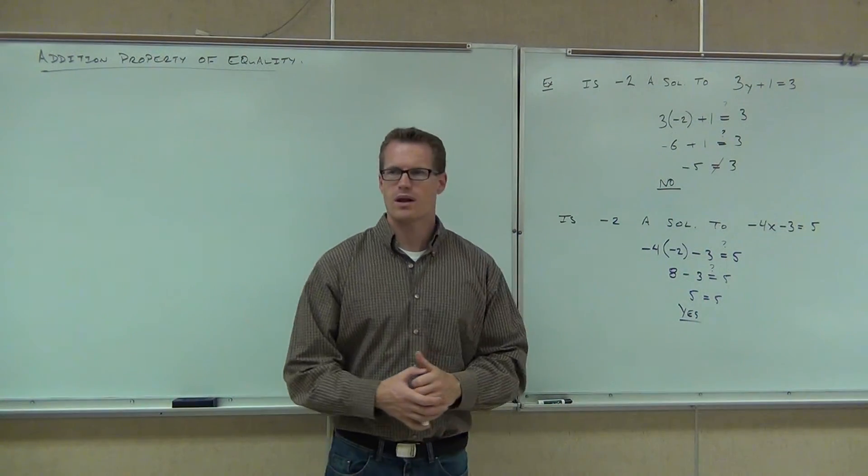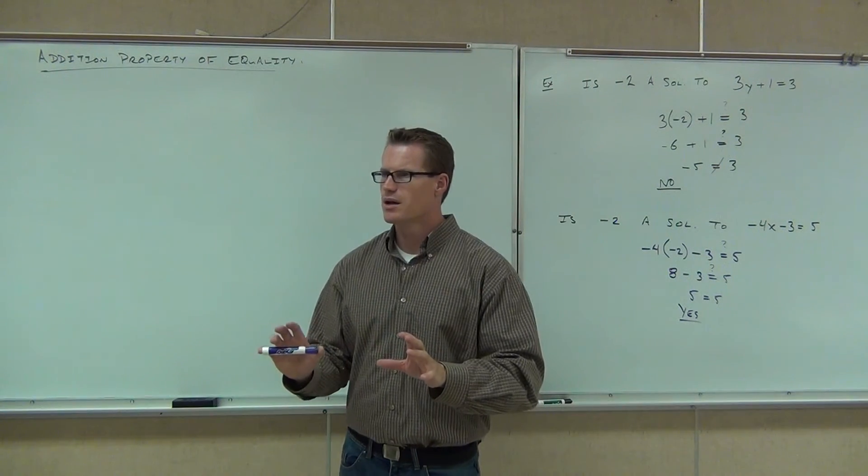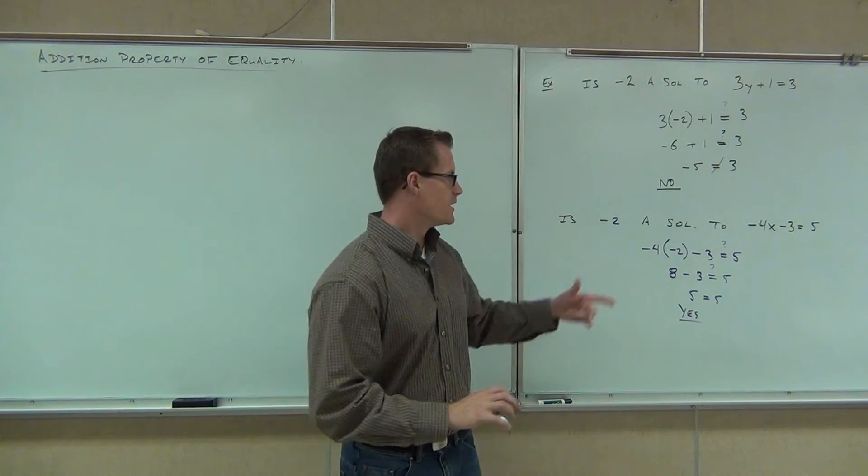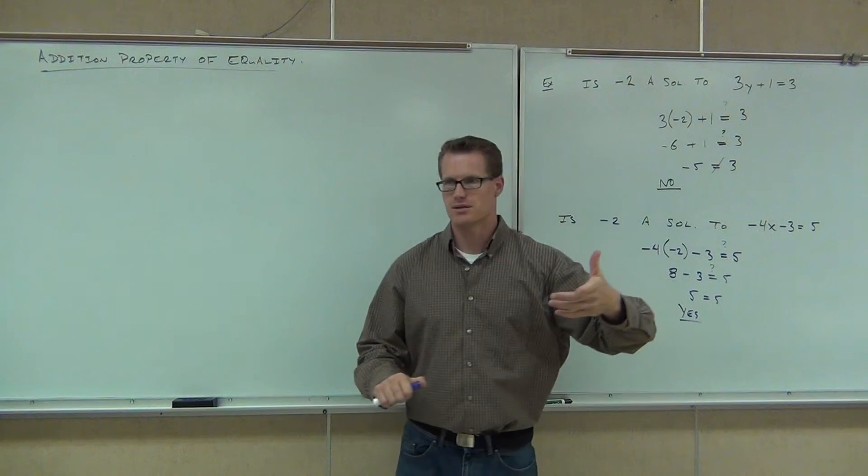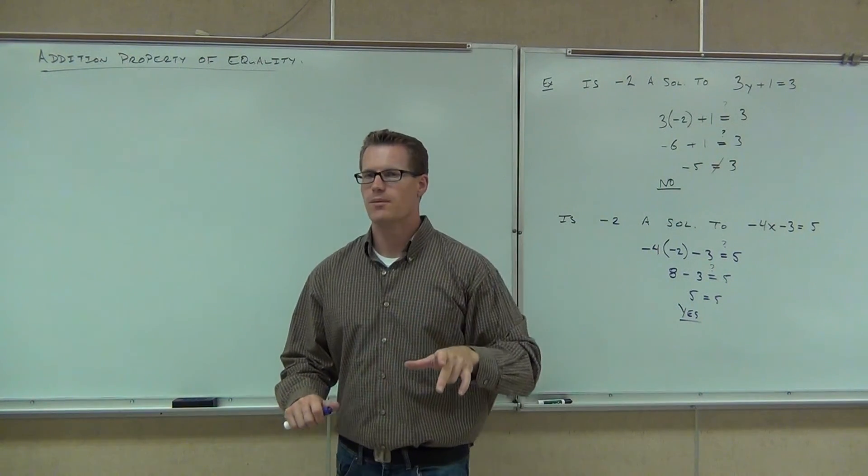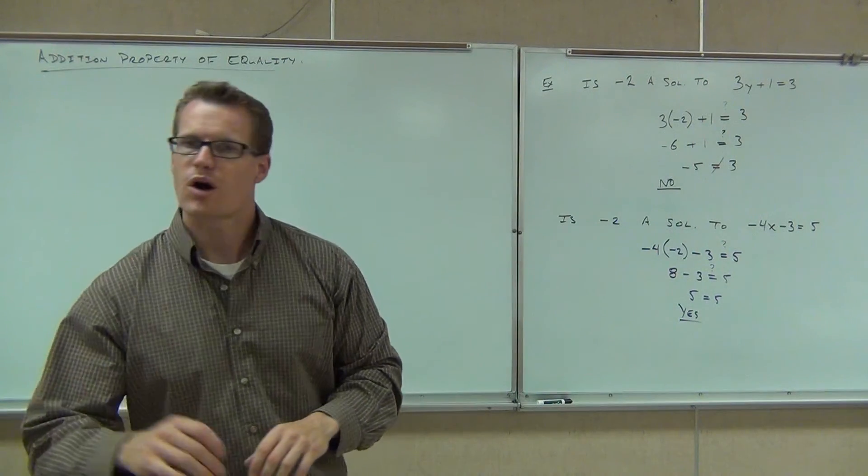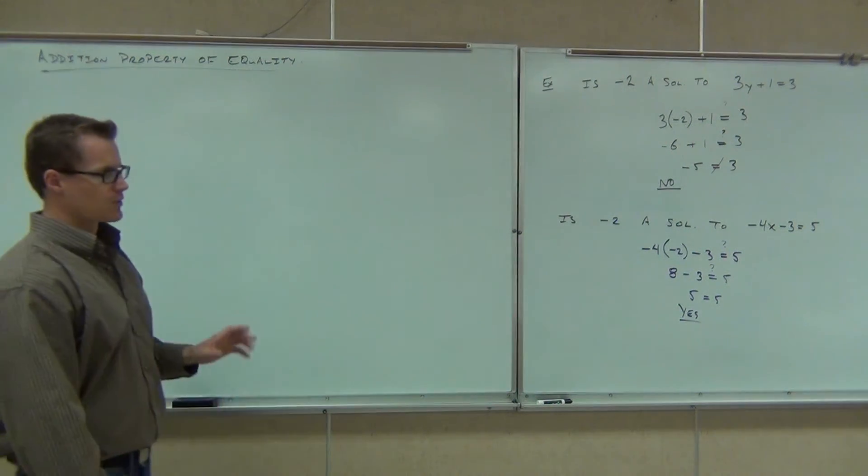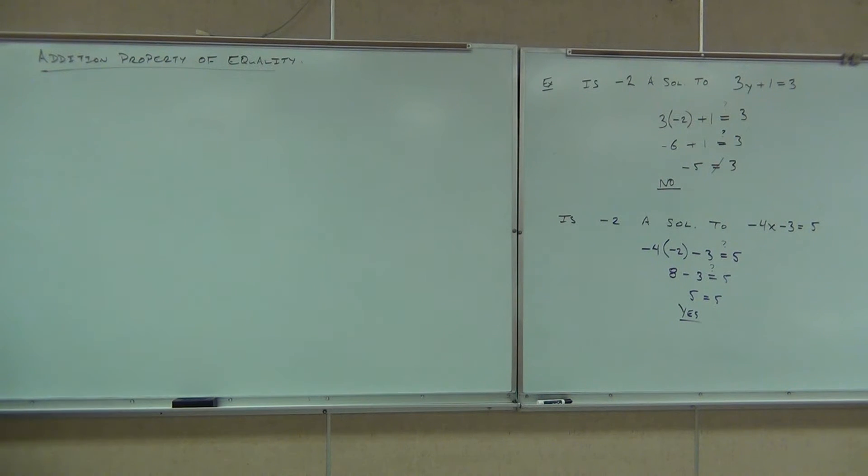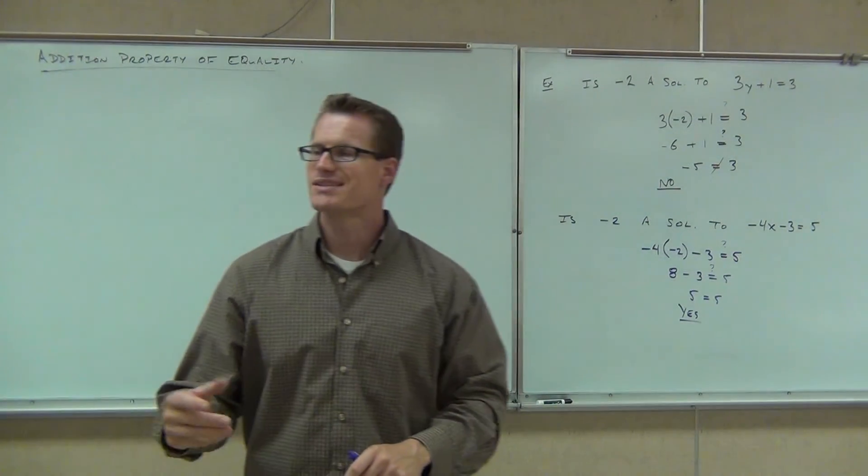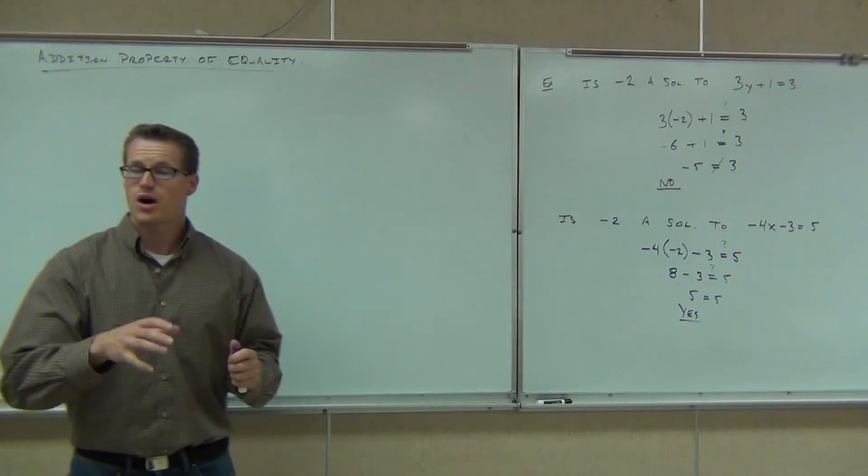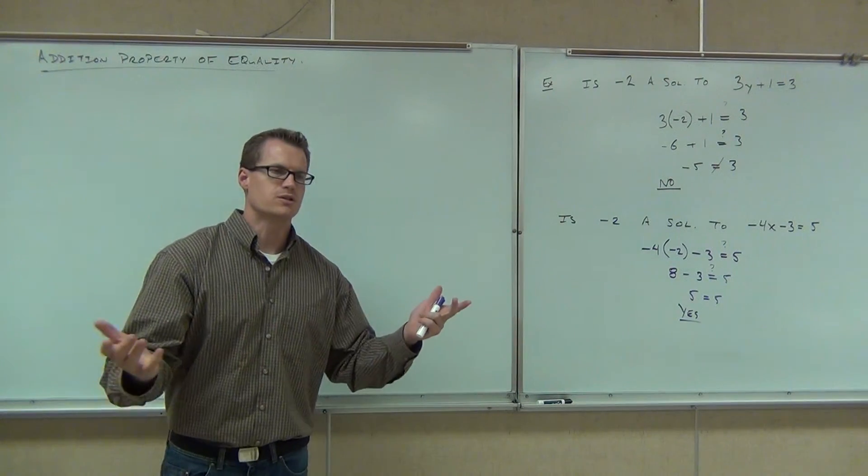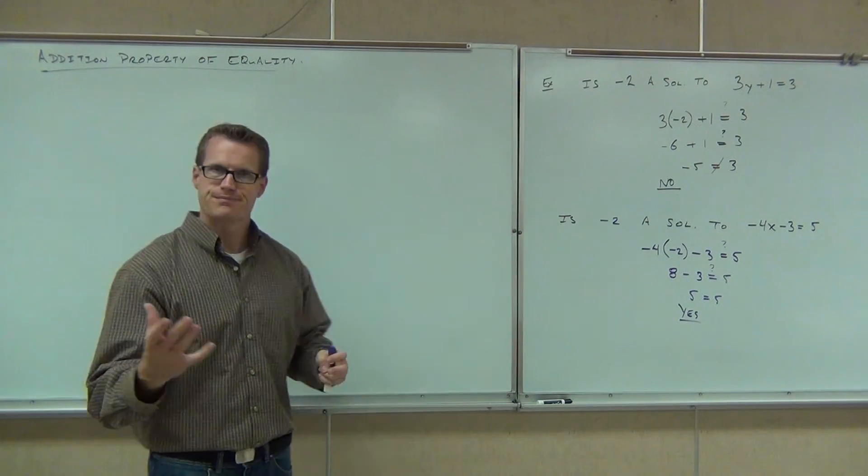Now this is all fine and good, right? We can tell whether something is a solution or not just by plugging it into our equation and seeing if we have a true statement. But typically we don't want to always be just checking random numbers, right? We want a way to systematically solve equations so that instead of just checking numbers, we can go straight to here and find the solution to this problem instead of randomly guessing. Are you with me on this? So what we're going to do now is we're almost there. We're going to talk about one property that's going to help us out with this and then we're going to start actually solving equations.